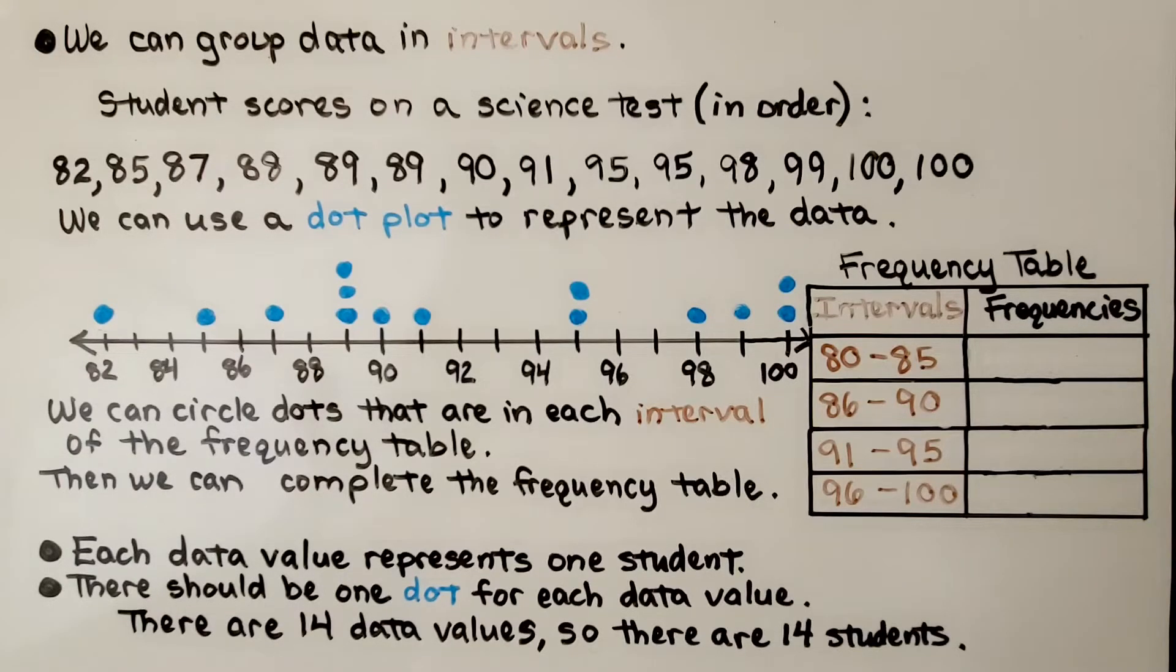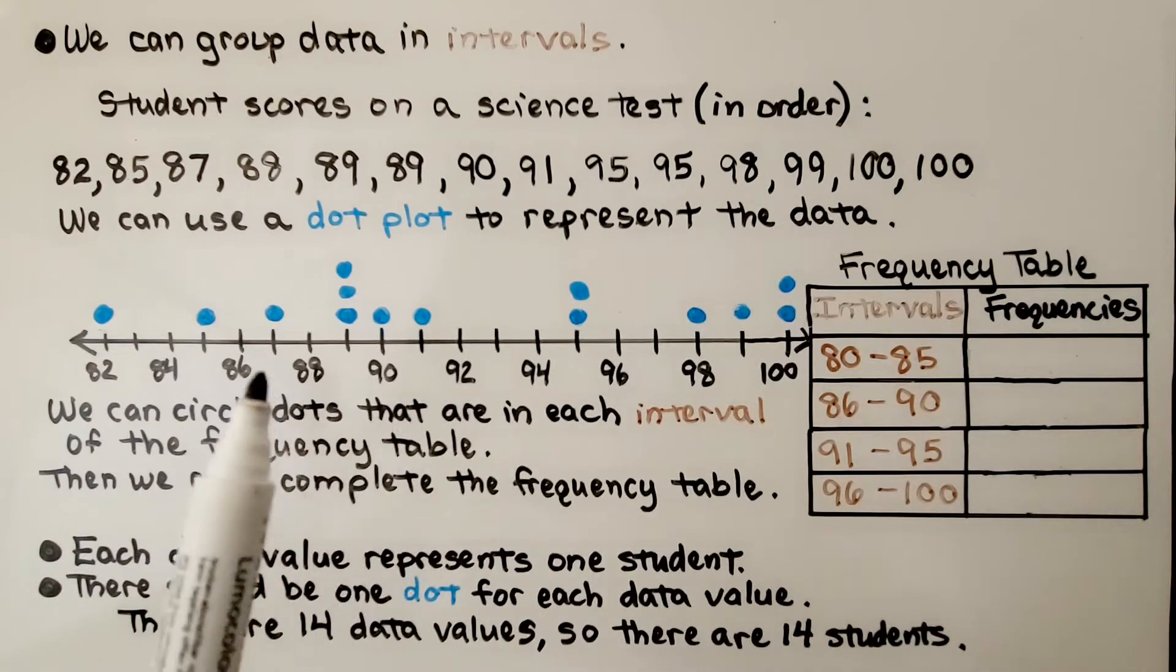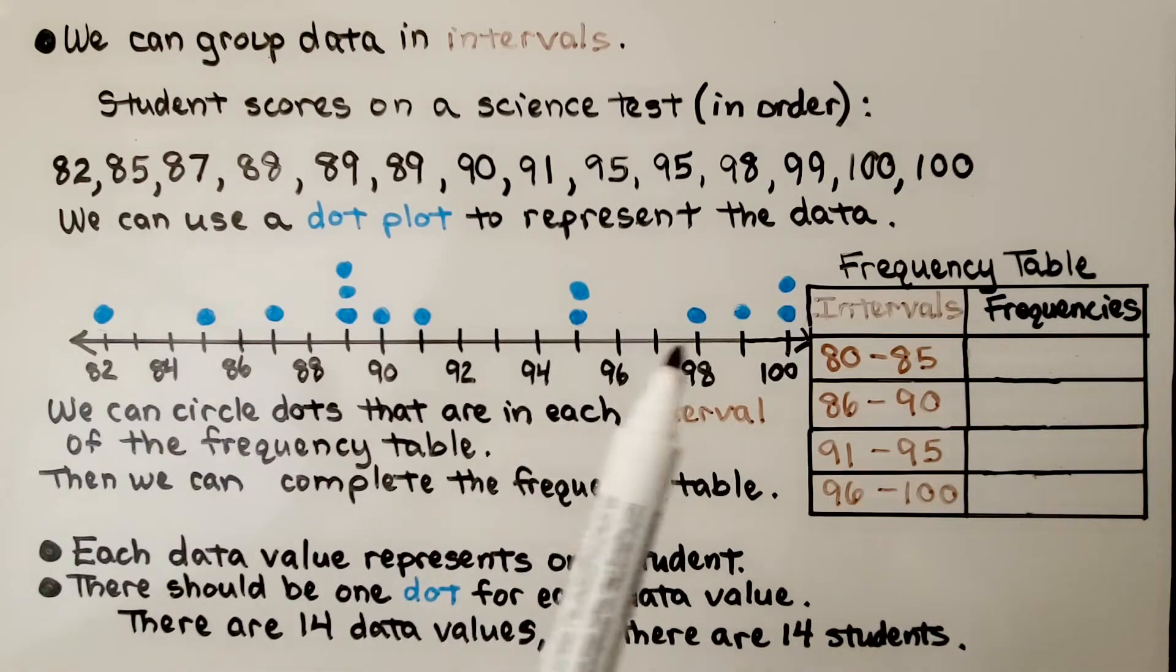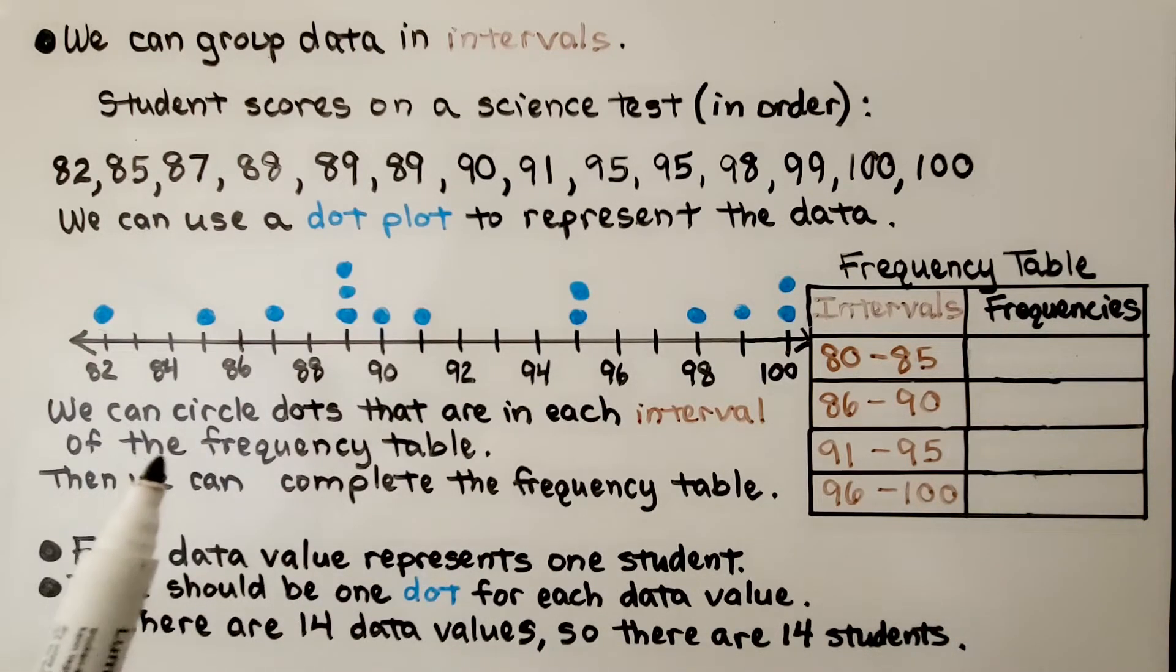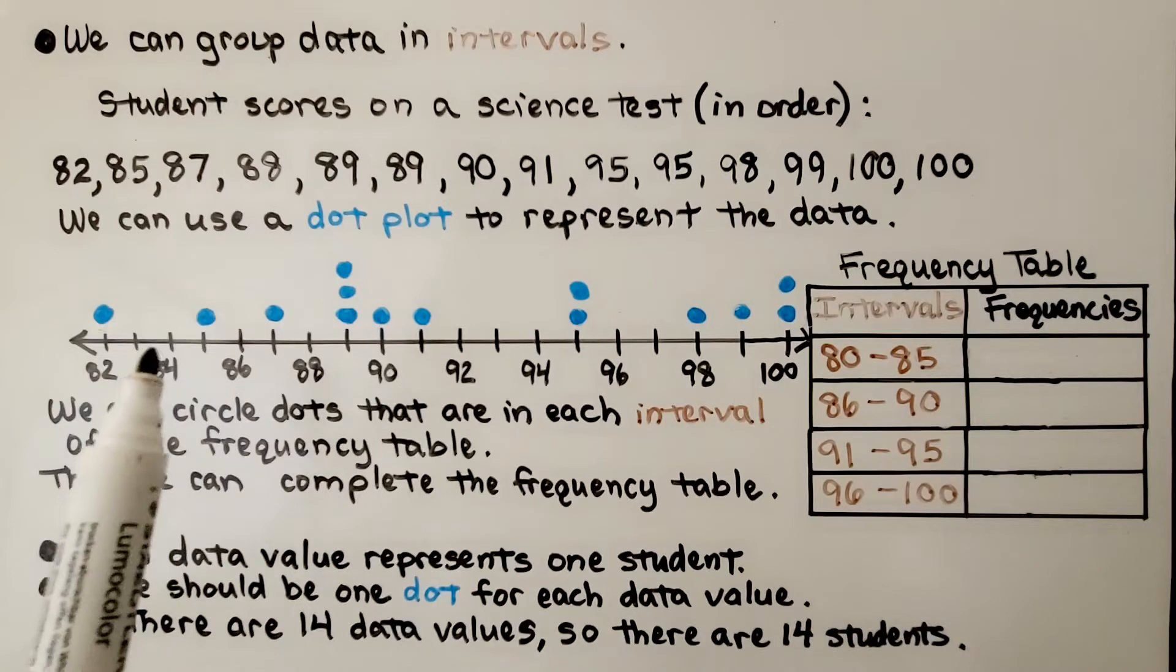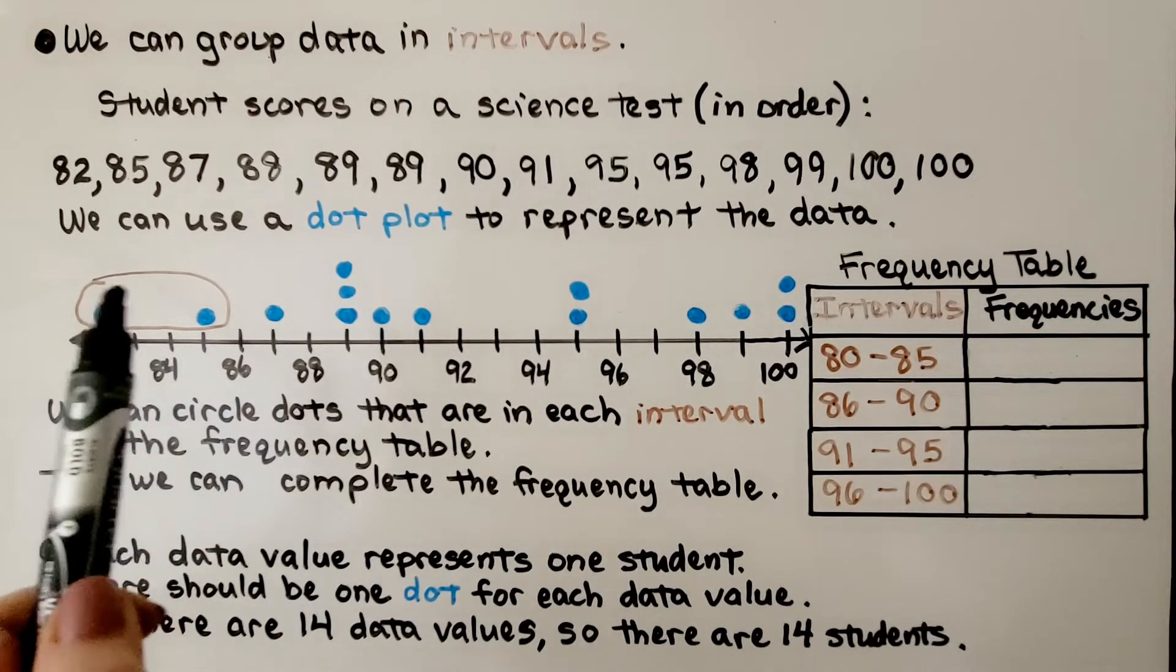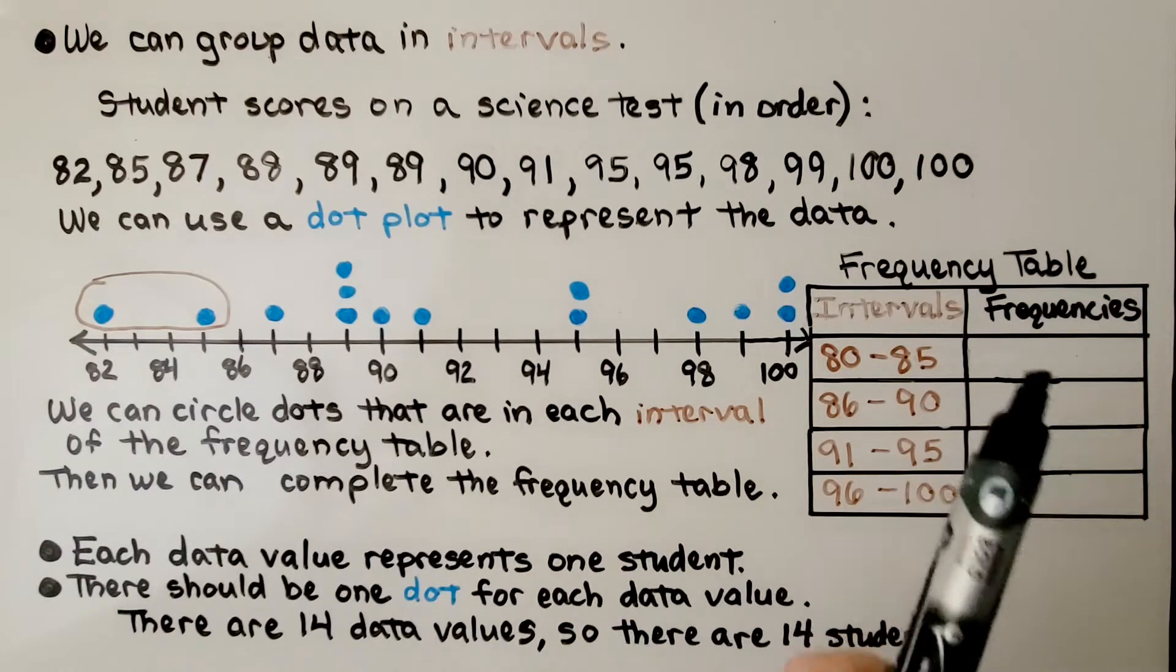We can group data in intervals. Here's some student scores on a science test, and they're already in order. We use a dot plot to represent the data, and we can circle dots that are in each interval of the frequency table. We have from 80 to 85. We circle those. We have 2 values in that interval. We put that into our frequency table.